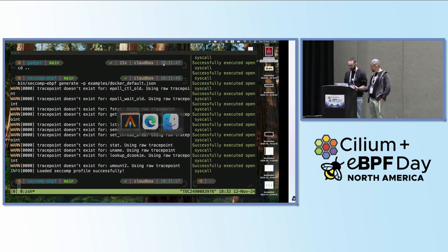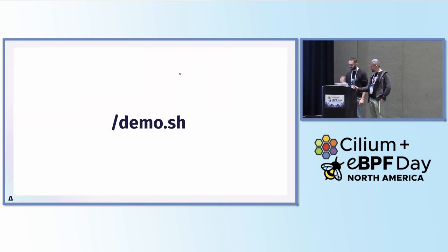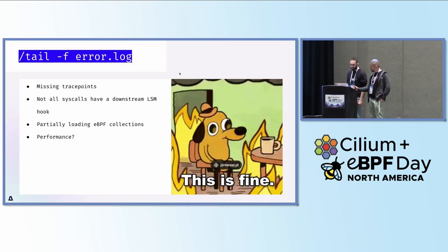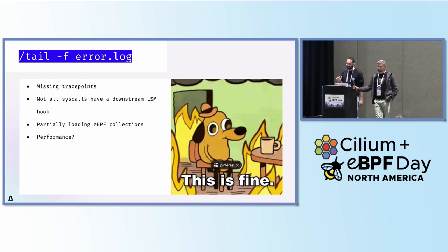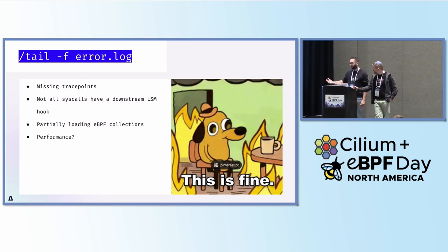So on the problem of missing trace points: trace points are really cool. What we could do without trace points is use kprobes, but the problem with kprobes is it requires a lot of effort to map all the different symbols within different kernel configurations or architectures. For a fun project that was out of the equation, but kprobes could be a really good solution for a production-grade seccomp alternative.